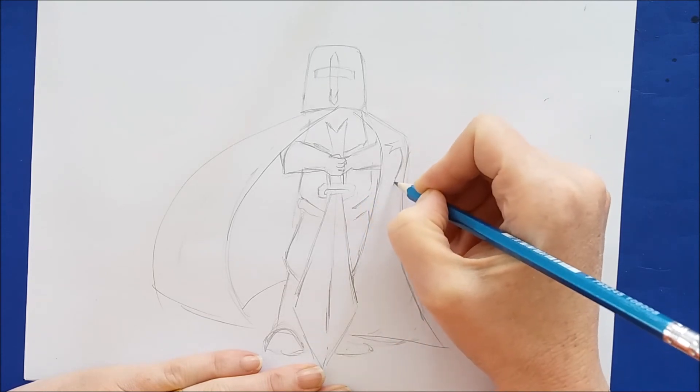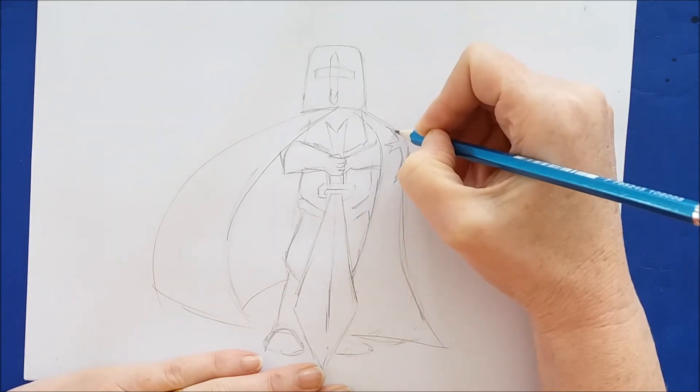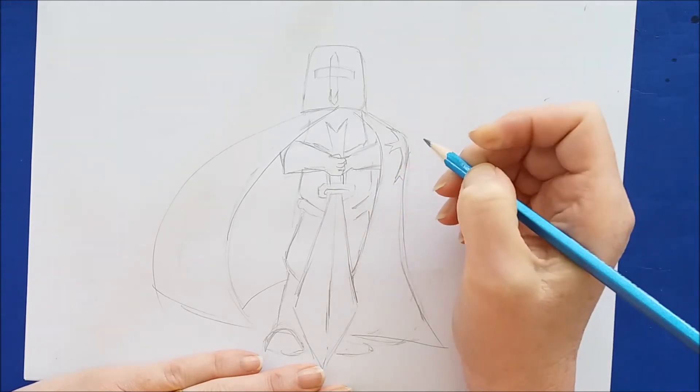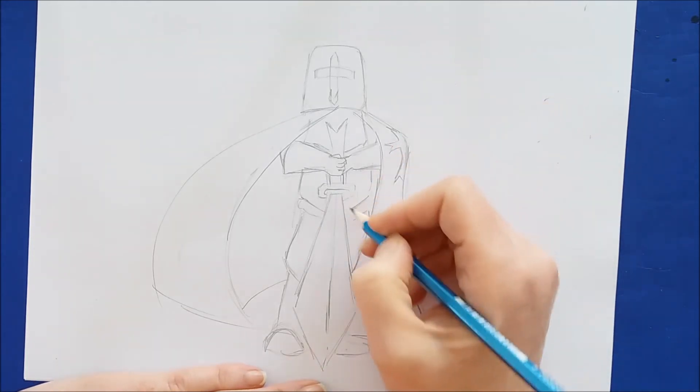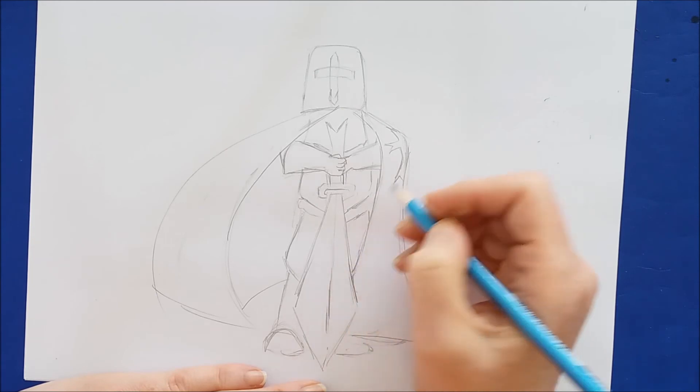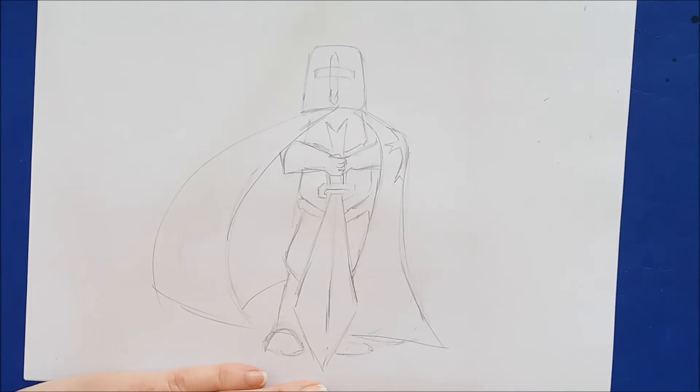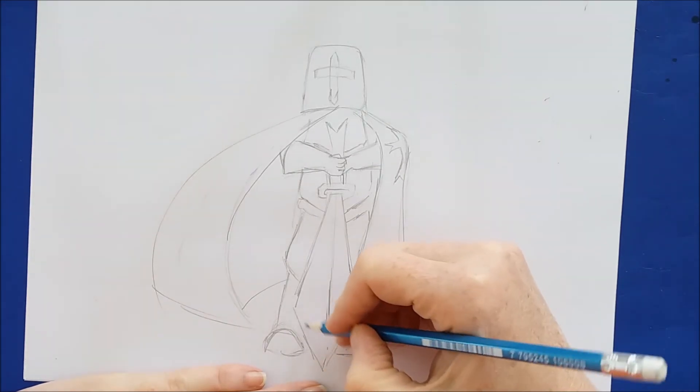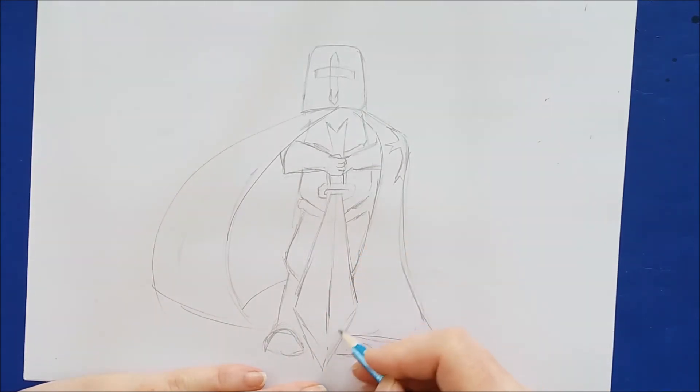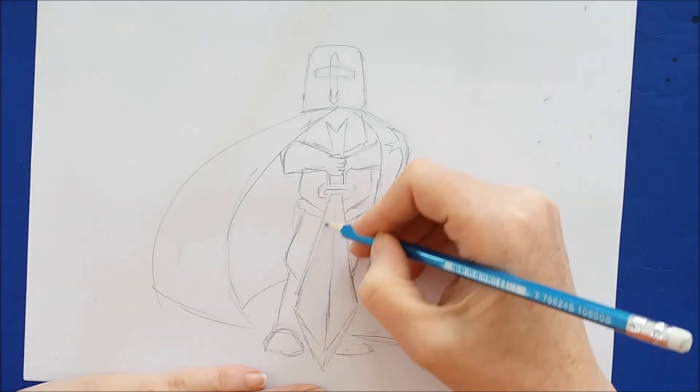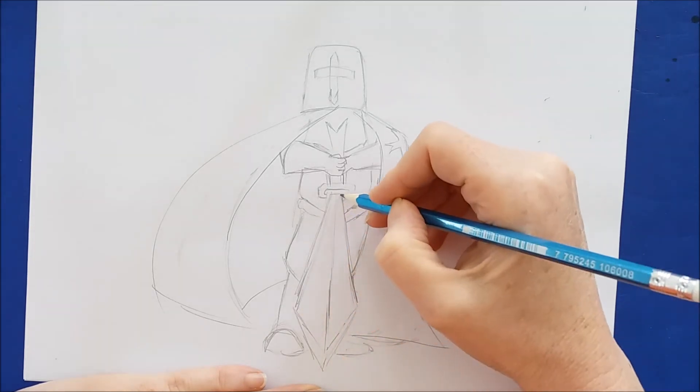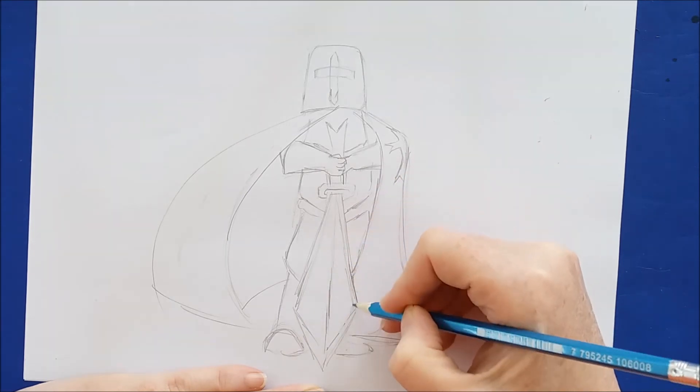I'm putting that cross in right here on the shoulder. I'm just looking at this knight now, I think it looks pretty good. Here we're adding the edge of the blade of the sword.